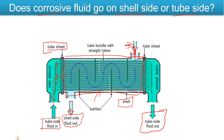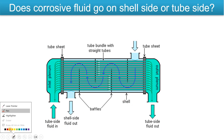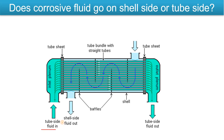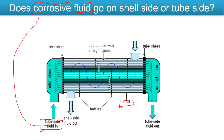So the question arises — if this is your corrosive fluid, where will it go? Should it flow in the tube side or in the shell side? The answer is: the corrosive fluid should flow in the tube side. Now I'll tell you the reason as well — why it should go in the tube side.